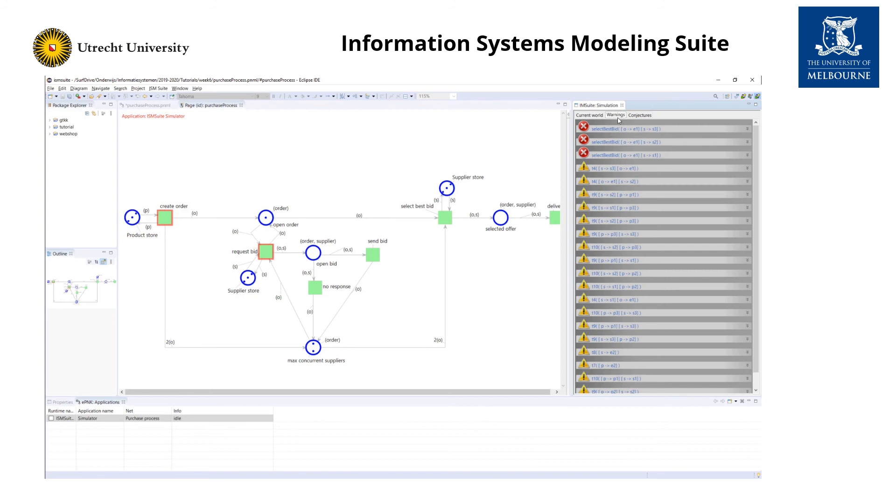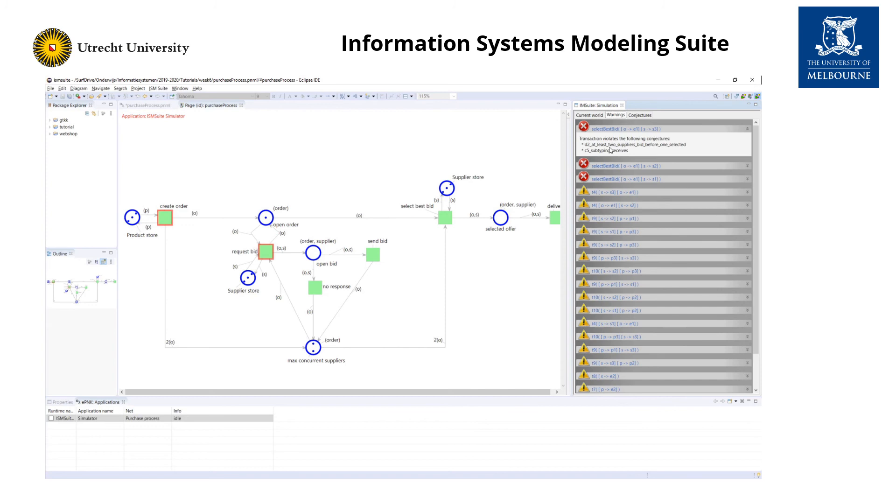Transition select best bid is not enabled. And the system tells us why by clicking on warning. Then we see that select best bid is not enabled, as at least two suppliers need to bid before one can be selected. And there's a subtyping constraint for received being violated, if you would fire that transition. So select best bid is not enabled.